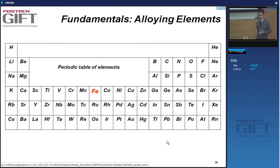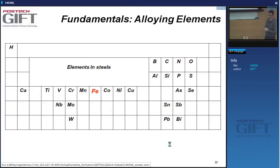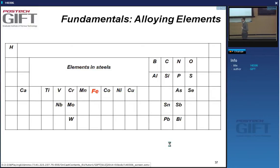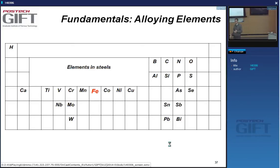Let's have a look at the periodic table of elements. You see iron there in the middle. If I highlight the elements of relative importance to steel design, you can see that we're still left with quite a few elements that steelmakers—whether they make specialty steels or carbon steels—will analyze routinely.